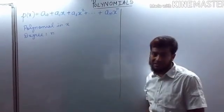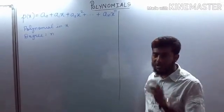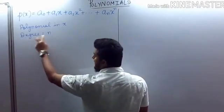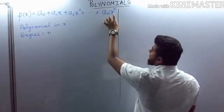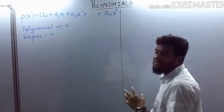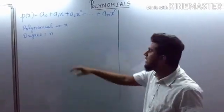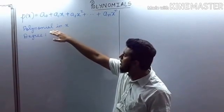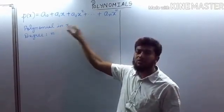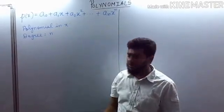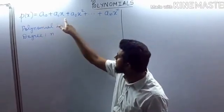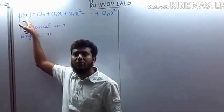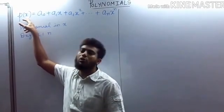The highest power of x, if it is a whole number, is called the degree of the polynomial. Here the degree is n, which is the highest power of x. This is called the degree of a polynomial. The notation p(x) means it is a polynomial in x — the variable representing the polynomial is x.